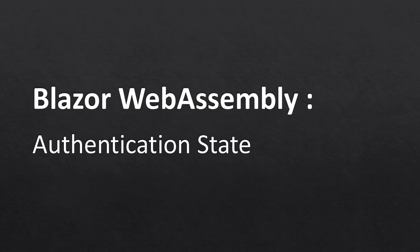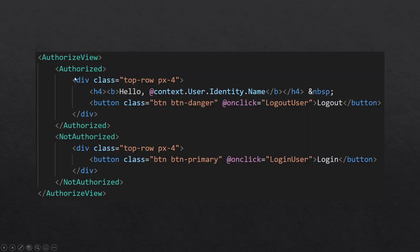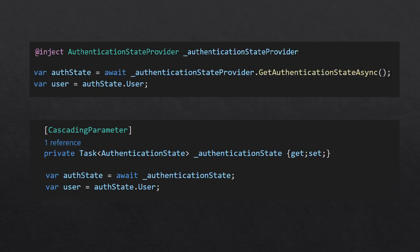Hello everyone. In this episode I'm going to talk about how you can use authentication state in a Blazor WebAssembly application. In the previous episode I talked about how you can use the Authorized tag and the NotAuthorized tag to show parts of your UI, and how you could get user information using the AuthorizeView context. I'm going to do the same thing but in code-behind - one way is by injecting AuthenticationStateProvider, another is by passing authentication state as a cascading parameter.